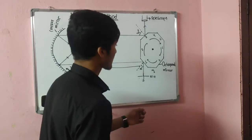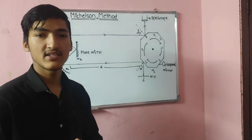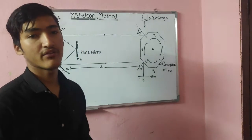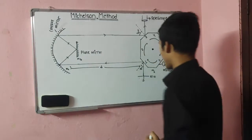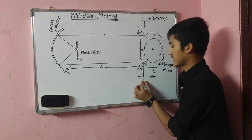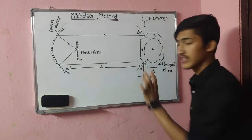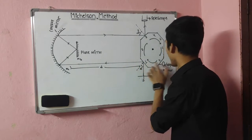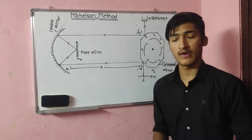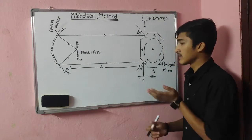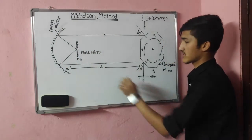In the first case, with the octagonal mirror stationary, whenever light from the intense source S is incident on one face of the octagonal mirror M1 at an angle of 45°, after passing through the slit, reflection occurs and the reflected light is sent to the concave mirror M2, which is at distance D.